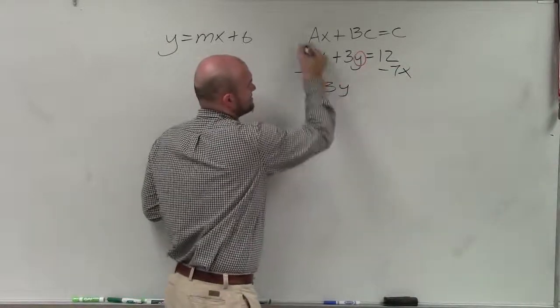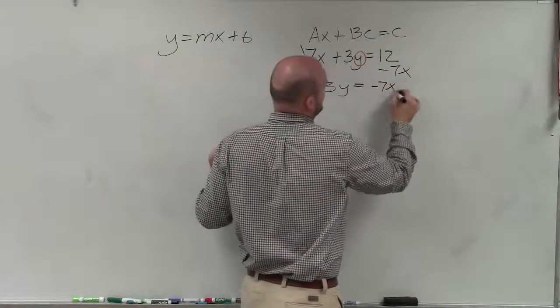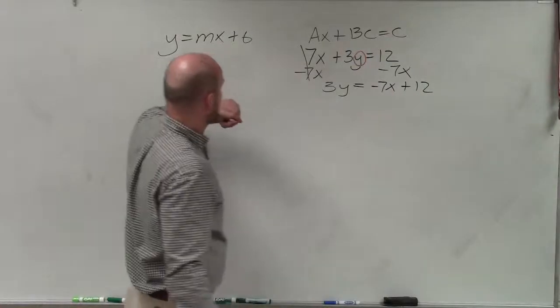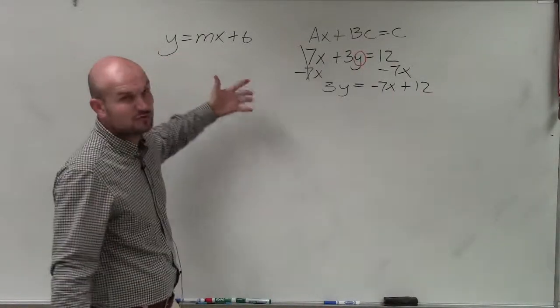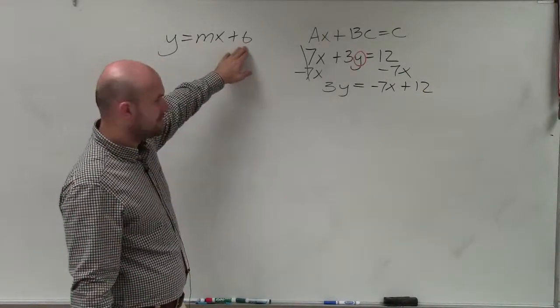So I'm going to subtract 7x on both sides. Then I'll write 3y equals negative 7x plus 12. Notice that's a positive 12. And I'm writing the negative 7x in front instead of writing 12 minus 7x, which would be the same thing, but we always want our mx in front of our constant.